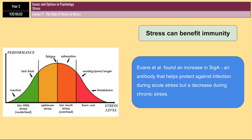Evans et al. arranged for students to give a talk to other students, which represented acute stress. These students showed an increase in SIgA, whereas SIgA levels decreased during examination periods lasting several weeks. Evans et al. therefore proposed that stress may have two effects on the immune system: upregulation — increased efficiency for acute stress — and downregulation — decreased efficiency for chronic stress.